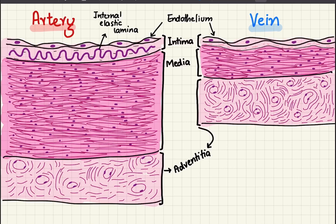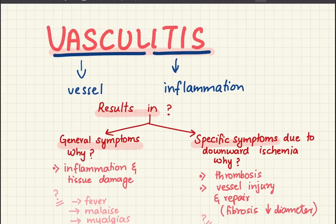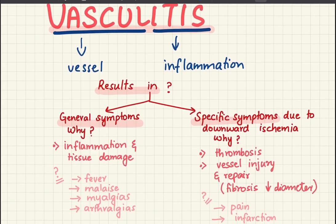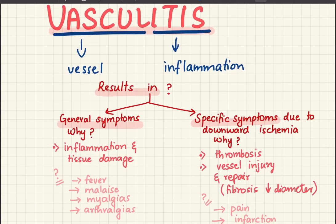This is a histological picture of an artery and a vein. You can see all three layers: intima, media, and adventitia. The internal elastic lamina can be seen here because arteries are more elastic, and the smooth muscle layer — the media — is more thick than in the vein.